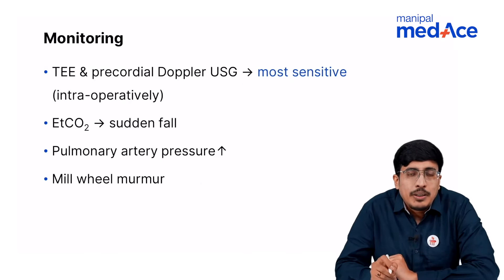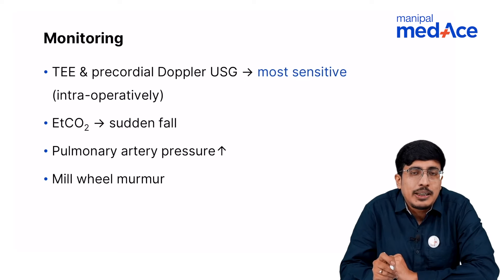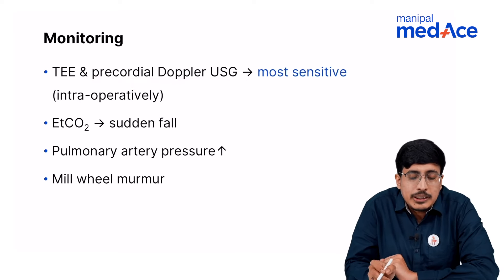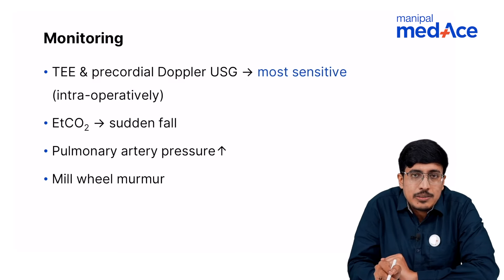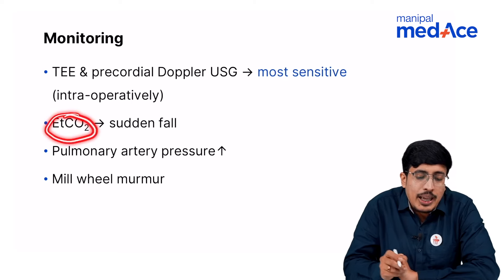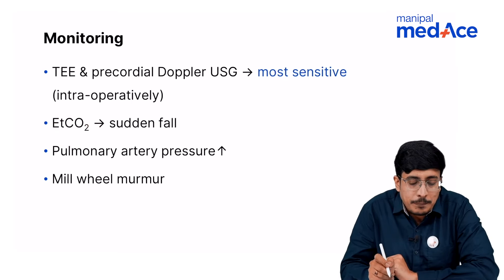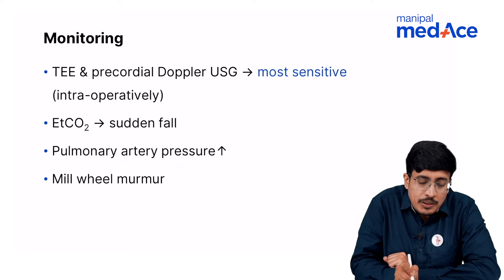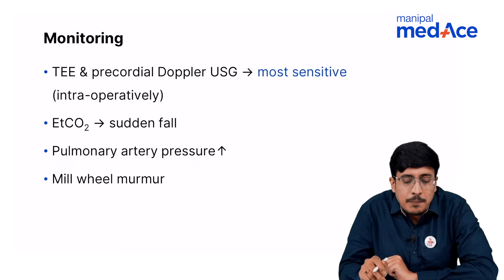For patients posted for craniotomies and long procedures like spine surgeries, invasive monitoring is performed. Transesophageal echo and precordial Doppler USG are the most sensitive intraoperative tools to diagnose sudden onset venous air embolism. A sudden fall in end-tidal CO2 can indicate venous air embolism. On auscultation, a mill wheel murmur will be heard, and a pulmonary catheter will show sudden elevation in pulmonary artery pressure.